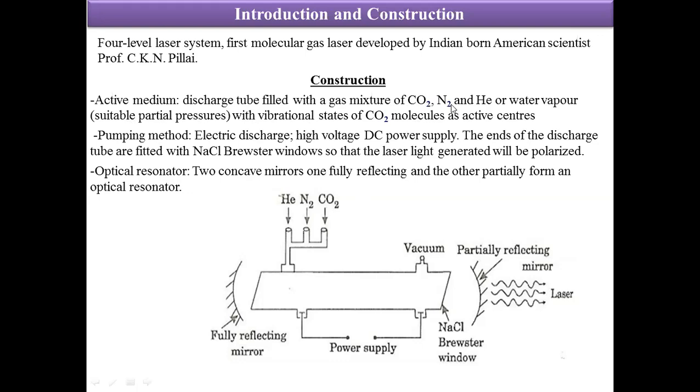These gases are filled in a discharge tube connected with a power supply. Electric discharge is the pumping method to achieve population inversion within this system. The ends of the discharge tube are fitted with NaCl Brewster's windows so that the laser light generated will be polarized.